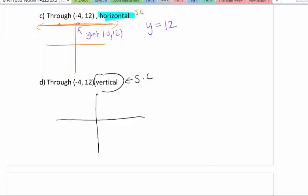So looking at D, we are also going through the point negative 4, 12, which is in the same location. But we are now doing a vertical line. So we ask ourselves, does it have an x-intercept or a y-intercept? This has an x-intercept. This is at an x value of negative 4. So the point is negative 4, 0. Since it has an x-intercept, it's an x equals line. x equals a negative 4. Because every point on that line will have an x value of negative 4.